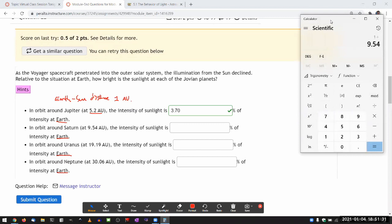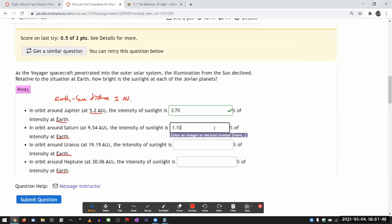So 1 divided by 9.54, square it, equals, and I'm just going to imagine moving this dot two decimal places. So that's going to be 1.0, well, 1.10, 1.10.